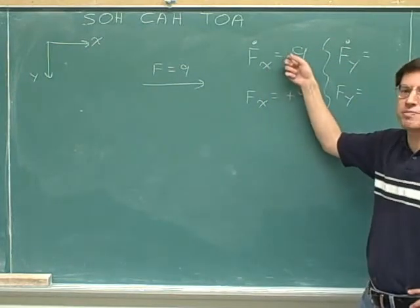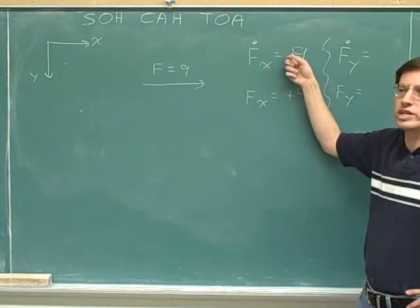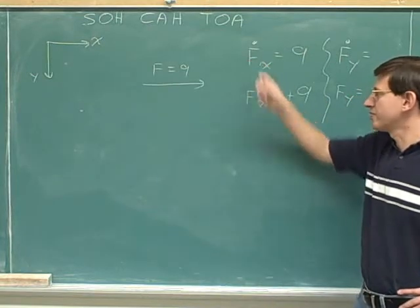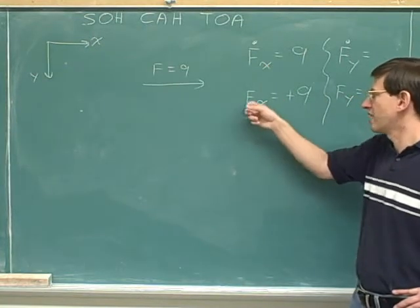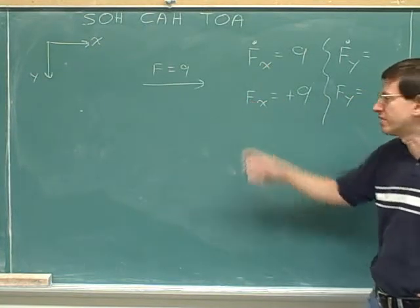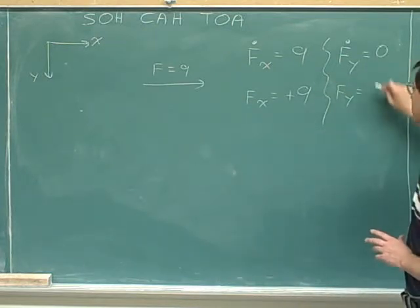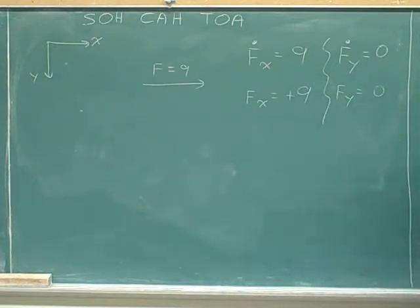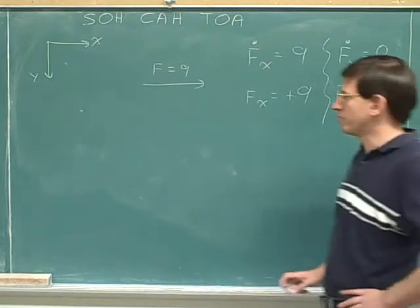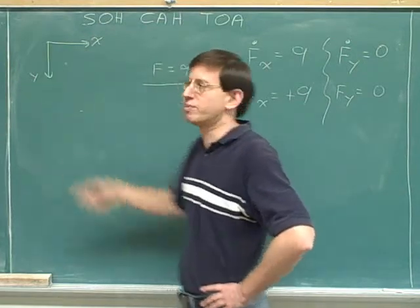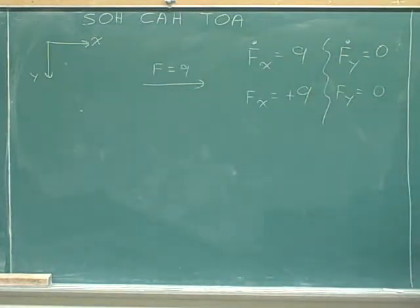We don't put a plus sign for magnitudes because magnitudes are always positive. We don't need signs for the variable with a dot, but we always need a sign for the signed component—the variable without a dot. It doesn't matter whether you're focusing on the magnitude or the signed component for the y component, because there is no y component. If this vector is purely horizontal, there is no vertical component, so those components would be 0.